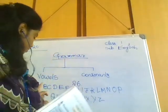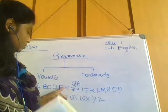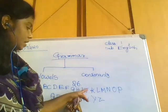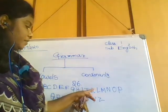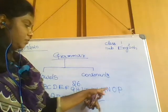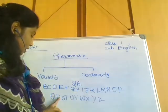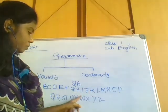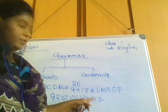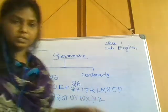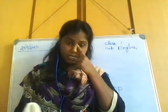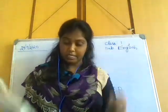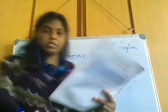Shall we start counting? 1, 2, 3, 4, 5, 6, 7, 8, 9, 10, 11, 12, 13, 14, 15, 16, 17, 18, 19, 20, 21, 22, 24, 25, and 26. We have 26 alphabets in English grammar.